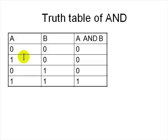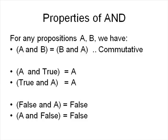And the truth table of and is similar to the table for or. Except that a and b is true only if both are true. If one of them is false the whole thing is false. And similarly the properties of and are. It is commutative a and b is same as b and a. And a and true is same as the value of a.